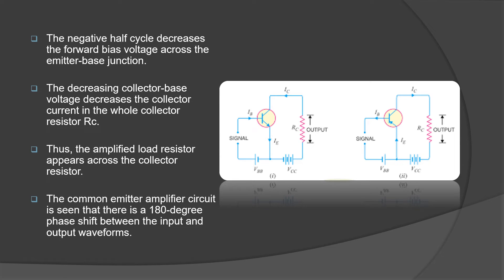The negative half cycle decreases the forward bias voltage across the emitter-base junction. The decreasing collector-base voltage also decreases the collector current in the total collector resistor RC. Thus, the amplification appears across the collector resistor.